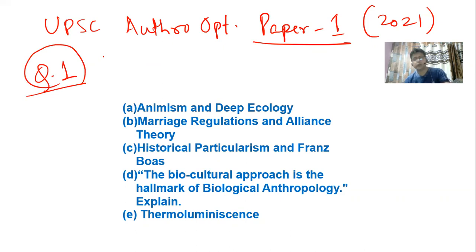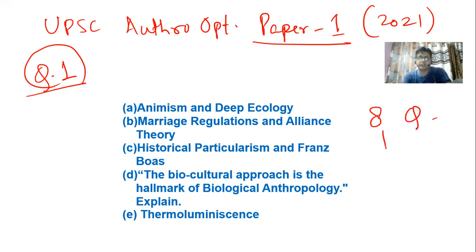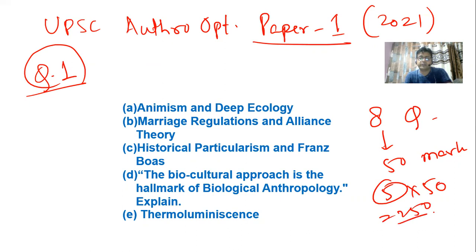2021 UPSC means that happened in February 2022. This is Paper 1, question one. Questions one and five are compulsory. Out of total eight questions, each of 50 marks, you have to attempt five — so five into fifty equals 250 marks. Each question has many subsections.